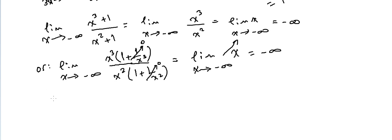You can use any method you want. For everything related to plus or minus infinity, highest exponent over highest exponent gives the answer. Let me take this next one: limit of (cos(x) − 1) over sin(x) as x approaches 0.